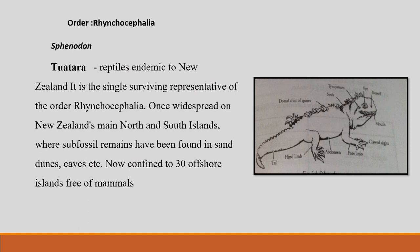Sphenodon, commonly known as the Tuatara lizard, is an example of a living fossil. It lives in burrows on some islands near New Zealand and is semi-aquatic in habit. It is nocturnal and carnivorous, mainly feeding on insects. It grows about two feet long and is dull olive green in colour with white and yellow spots. On the dorsal side there is a row of spines formed from scales extending from the head to the tail except on the neck. It lays about ten hard white-shelled eggs, which take more than one year to hatch.